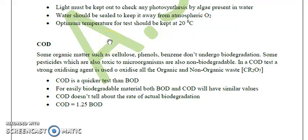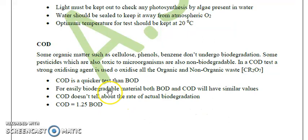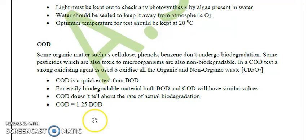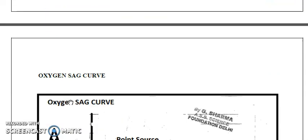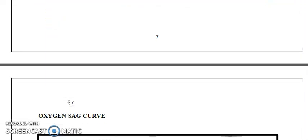For easily biodegradable matter, BOD and COD will generally have similar values; otherwise COD is always higher than BOD. COD does not provide any information about the rate at which actual biodegradation takes place. However, it can be used to estimate BODU (unseeded BOD). Some literature states that COD is around 1.25 times BOD, and COD is always greater than BOD, while BODU is greater than BOD5.